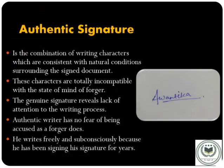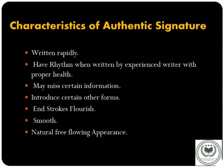An authentic signature is the combination of writing characters consistent with natural conditions surrounding the signed document. These characters are totally incompatible with the state of mind of a forger. The genuine signature reveals a lack of attention to the writing process, and the authentic writer has no fear of being accused as a forger. They write freely and subconsciously, having signed their signature for years. Characteristics of an authentic signature include: written rapidly, having rhythm when written by an experienced writer in proper health, may miss certain information, introduces certain other forms, end-stroke flourish, endings of letters that are generally smooth, and a natural free-flowing appearance.